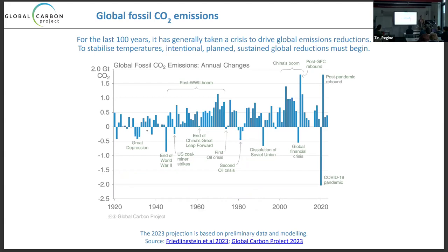This shows the annual change in fossil fuel emissions — how it changes from one year to the next. For most of the last hundred years we've had positive changes, as expected. But the key takeaway is: to get fossil fuel reductions, we need to be in a crisis. The only way it's happened in the last hundred years is when bad things have happened, like financial crashes or wars. If we want systemic reductions in fossil fuel emissions, we need different thinking.